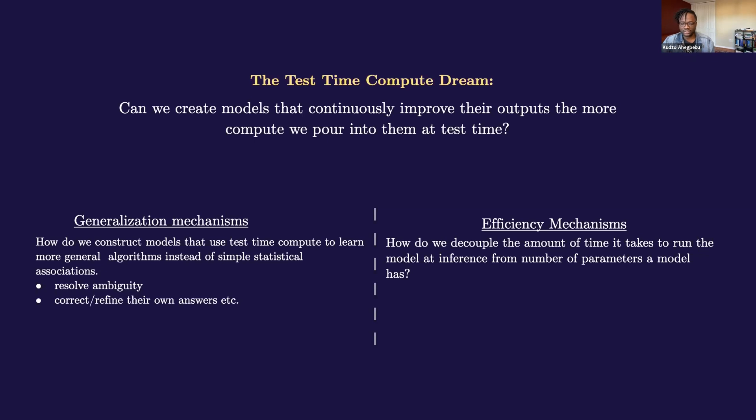The second side of this coin is efficiency stuff. And this deals with the question of how we can decouple the amount of parameters that a model has from the amount of time that it takes to run the model at inference, with the motivation here being that if we can construct models that are larger but that don't incur a larger computational cost for those extra parameters, then we win.